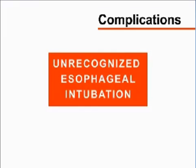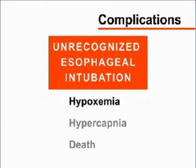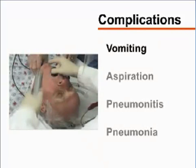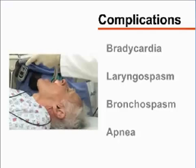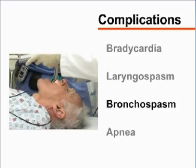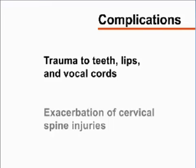The most serious complication of endotracheal intubation is unrecognized esophageal intubation, which may lead to hypoxemia, hypercapnia, and death. Laryngoscopy can provoke vomiting and aspiration of gastric contents, causing pneumonitis or pneumonia. Additional complications include bradycardia, laryngospasm, bronchospasm, and apnea due to pharyngeal stimulation. Trauma to teeth, lips, vocal cords, and exacerbation of cervical spine injuries can also occur.